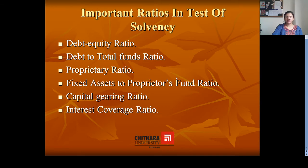There are six major solvency ratios: debt equity ratio, debt to total funds ratio, proprietary ratio, fixed assets to proprietary funds ratio, capital gearing ratio, and interest coverage ratio. Let's discuss them one by one.